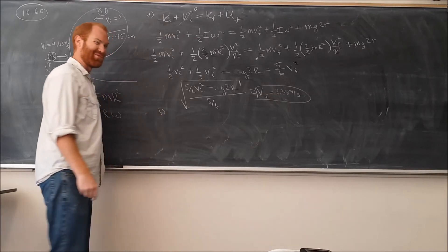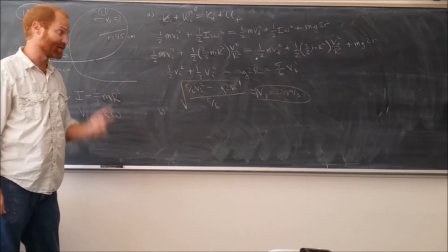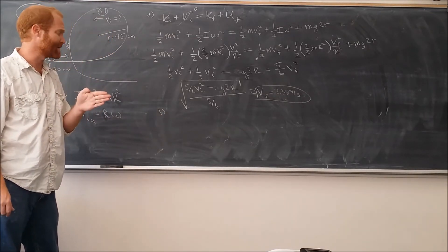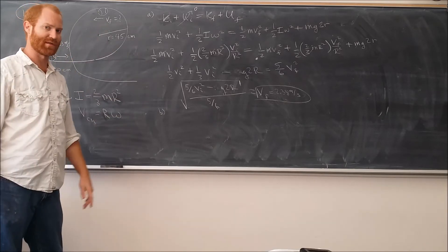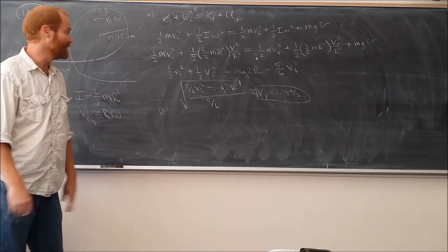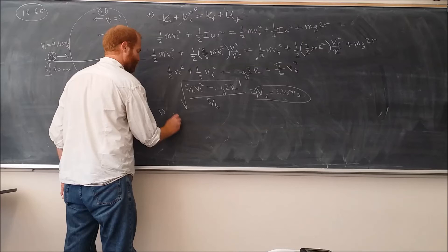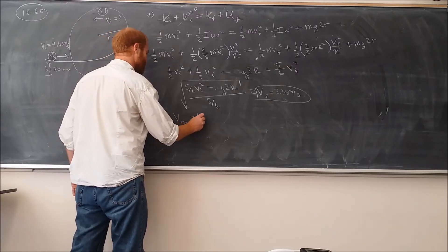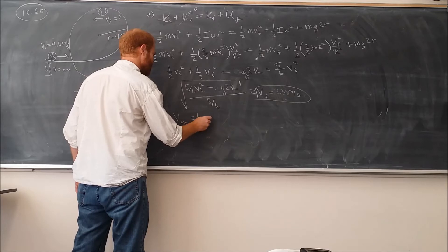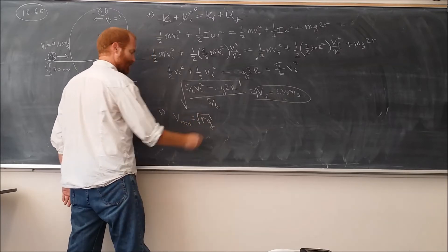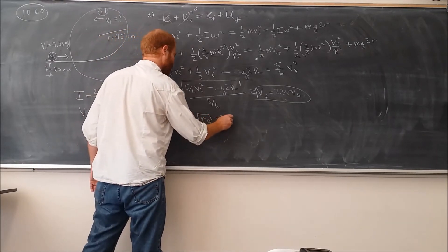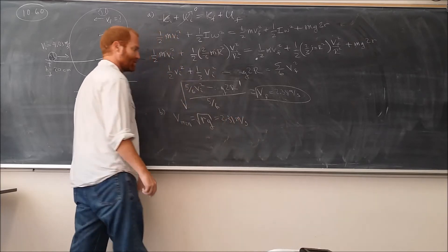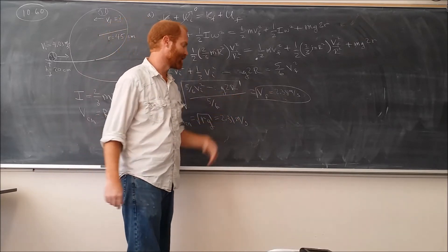Part B asks, is it going to be able to stay on the track at the top? The way to understand that is that at that point, the normal force on the object, the minimum speed it needs to stay up there is when the normal force on the object is zero. And I've derived in class before this. The minimum speed should be the square root of Rg. The minimum speed is going to be 2.31 meters per second. That is bigger. So it does turn on the track.